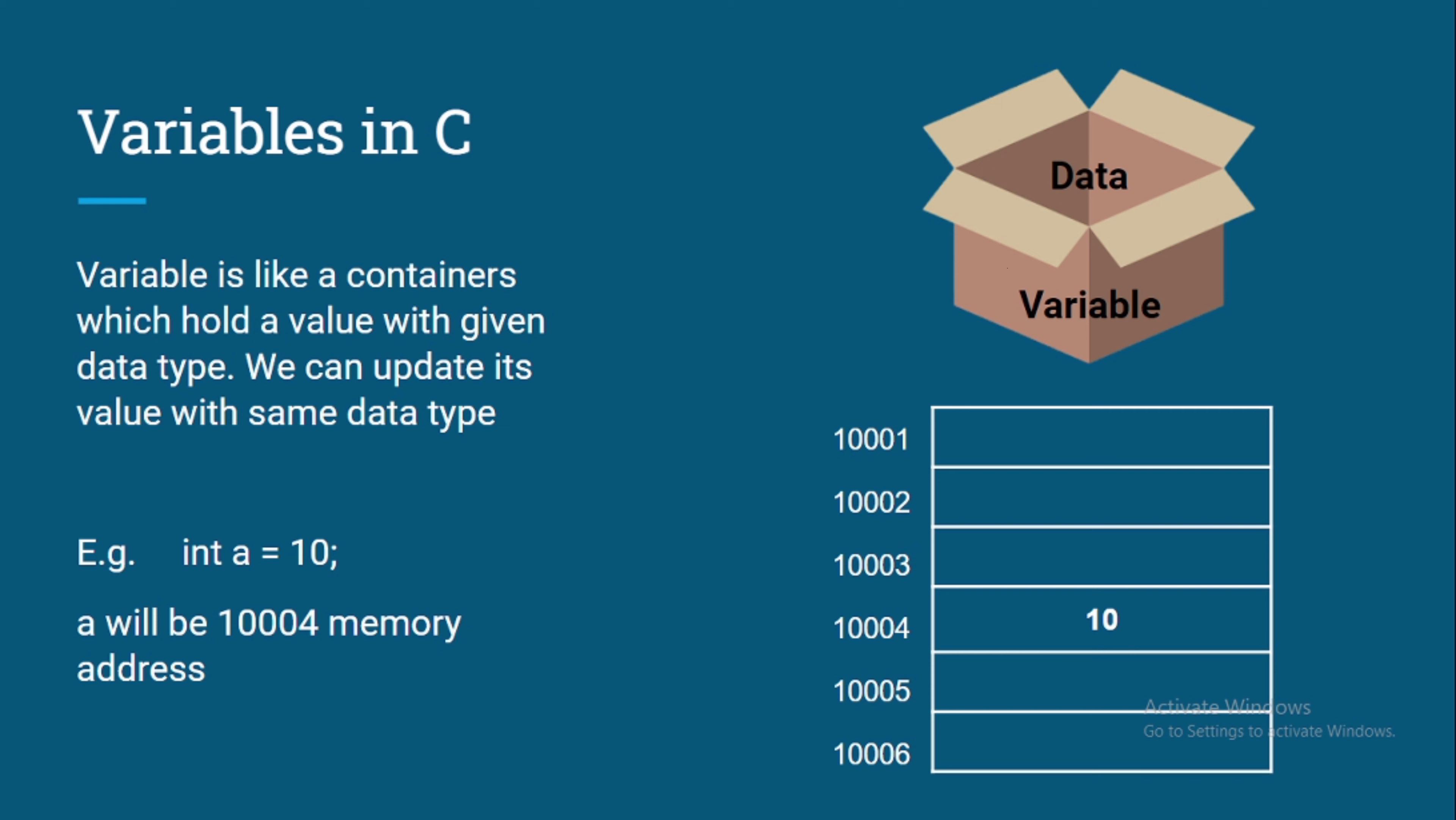And right now I am just giving example 10004, but in the computer we have trillions of memory addresses and the memory address is very long and it is impossible for us to remember that. For that we use variable. So a will be the 10004 memory address basically. So a is a reference of 10004 memory address where 10 is stored.